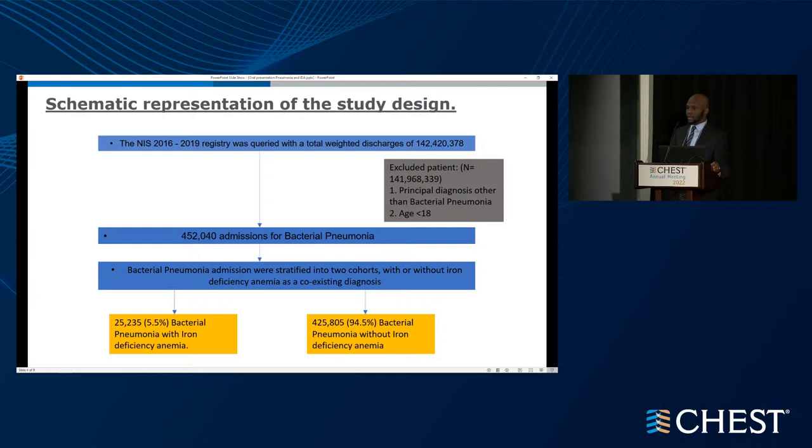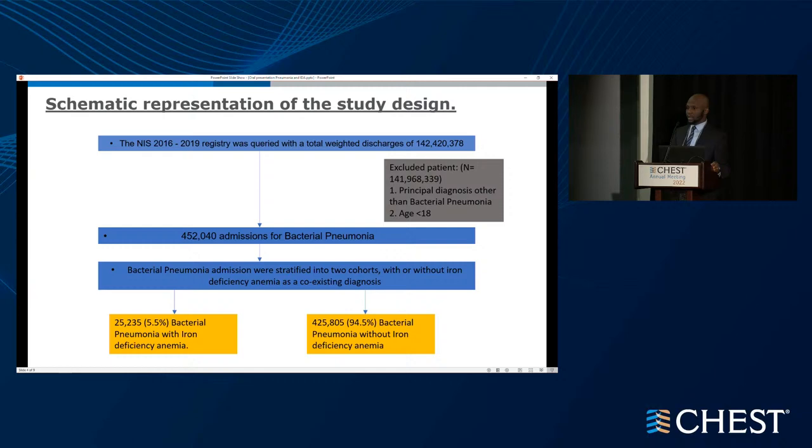This is a schematic representation of the study design. Over the period of 2016 to 2019, we had about 142 million discharges from the hospital. Using our inclusion criteria, we were able to identify 452,000 patients with bacterial pneumonia. We divided them into two cohorts: patients with iron deficiency anemia and those without iron deficiency anemia.